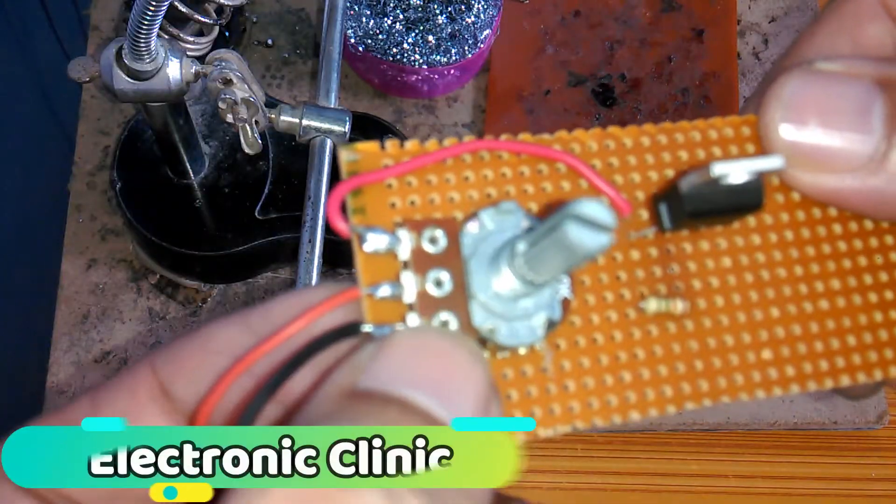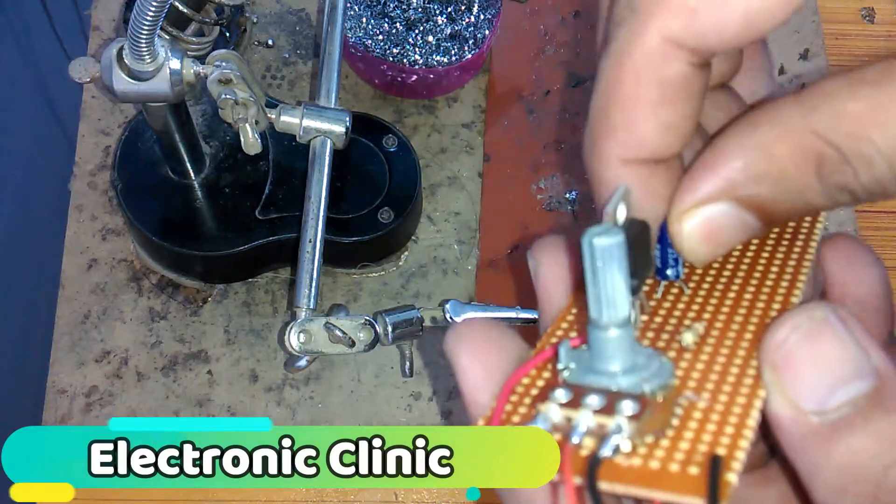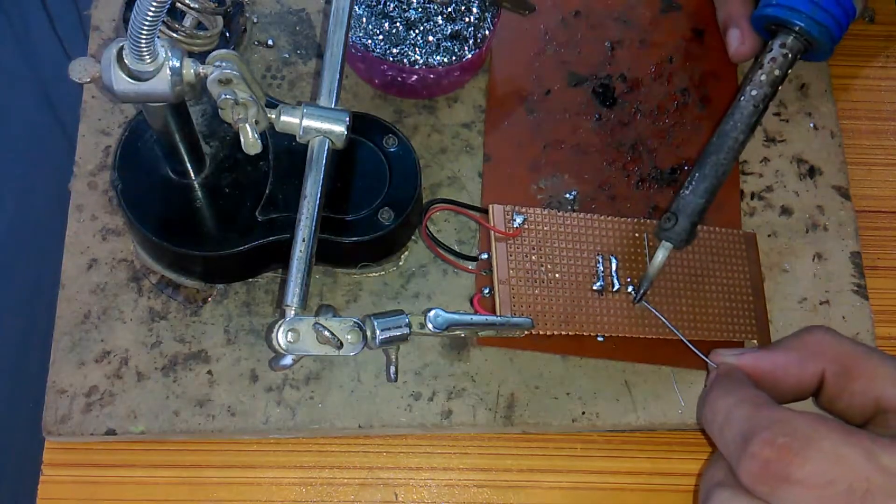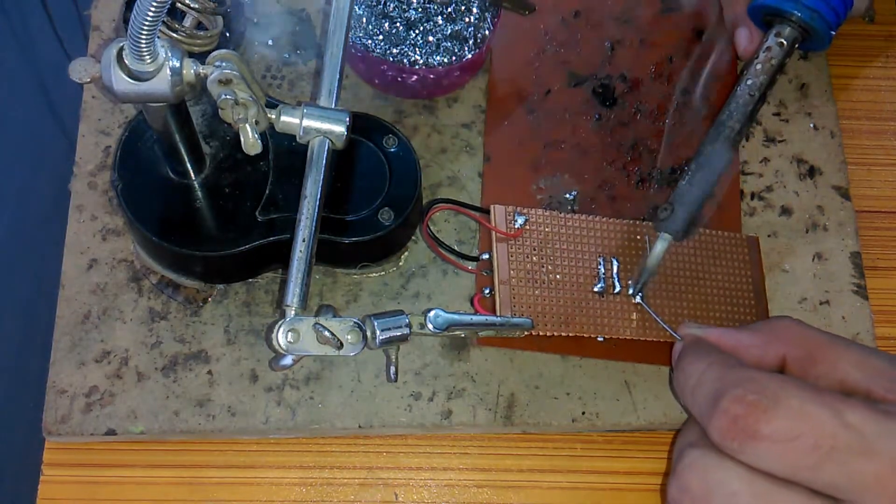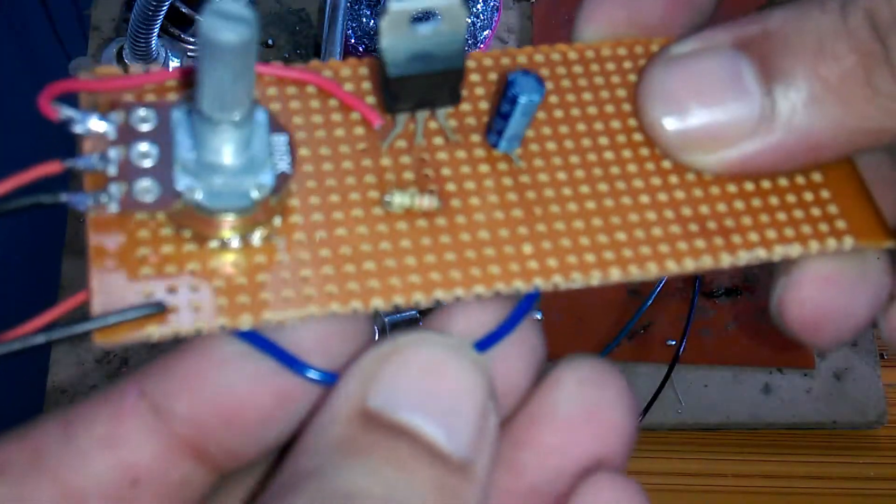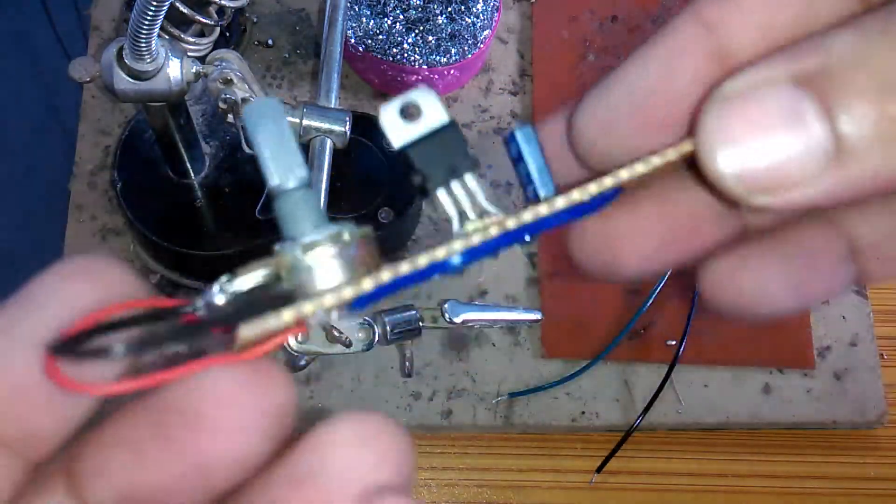And then we connect a 33 microfarad capacitor. Its positive leg is connected with the Vin, and the short leg will be later connected with the ground. Solder the legs, and again, don't apply too much heat. I used a blue wire to connect this with the ground.